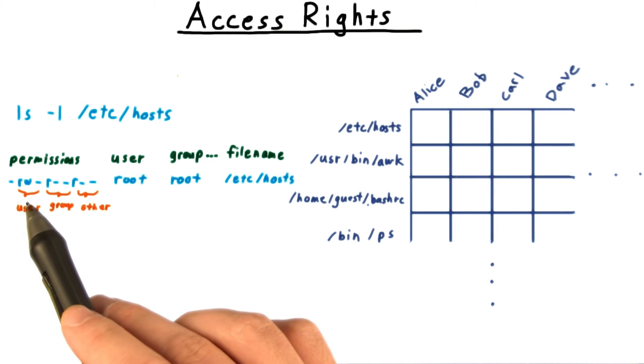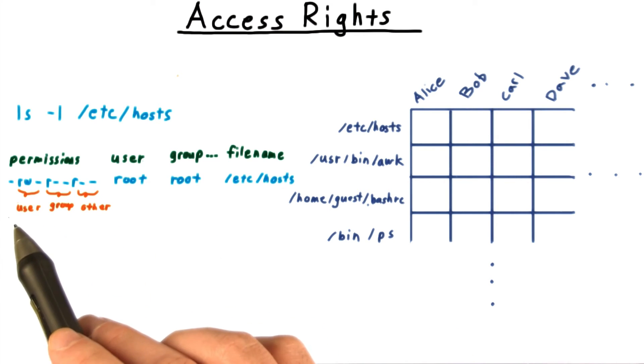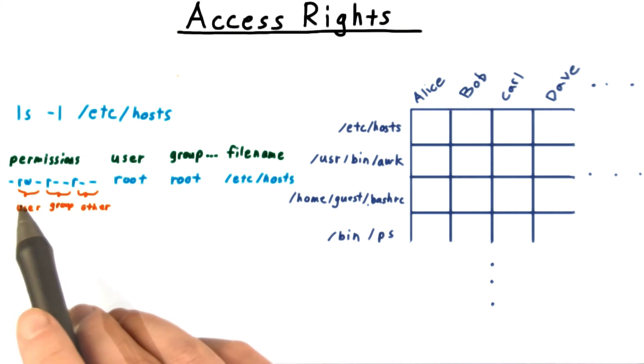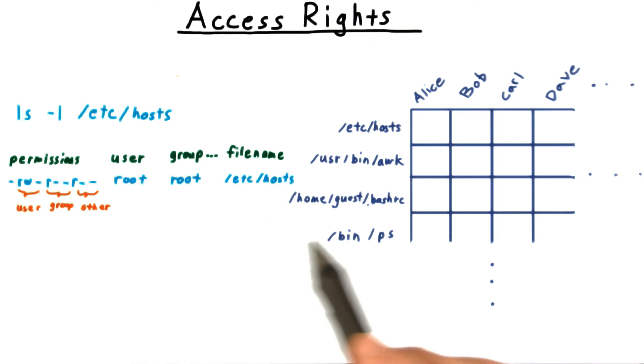We have separate read, write, and execute bits for the owner or user, the group, and then another set for everybody else. This gives us a total of nine bits instead of three times the number of users on the system.